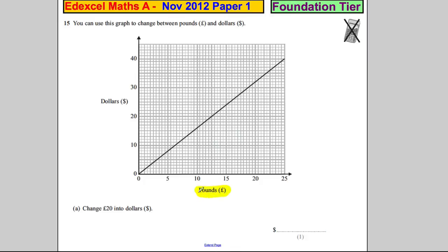So read the correct axis. Here's the pound axis. And we want to change 20 pounds into dollars. You must draw your lines. So draw a line up from 20 pounds. Where it crosses your graph, you read across.